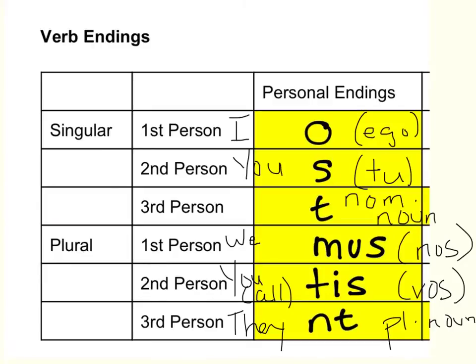You must know O, S, T, mus, tis, and NT. That's the first step to getting these personal endings under control — that is, recognizing them. Now we're going to move on to several examples.